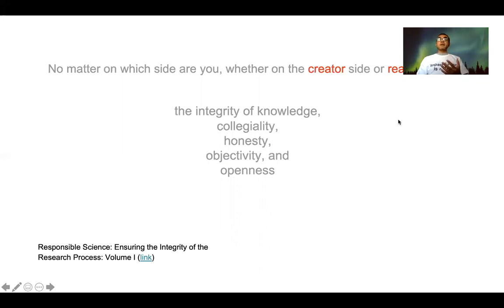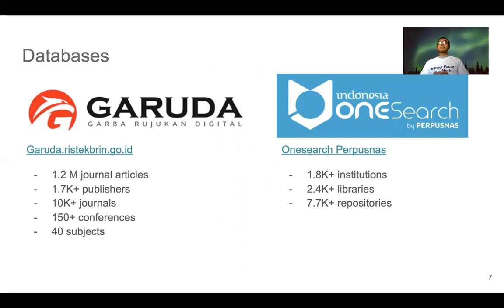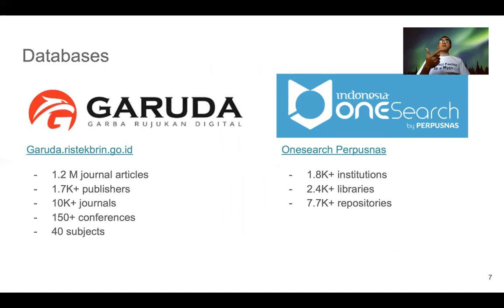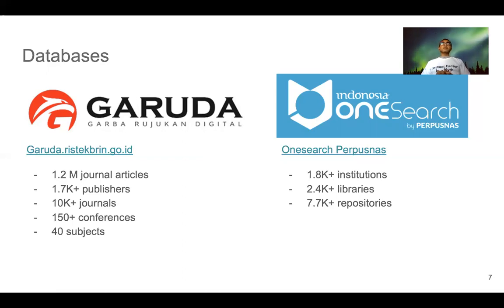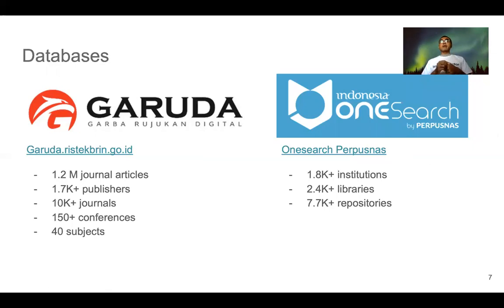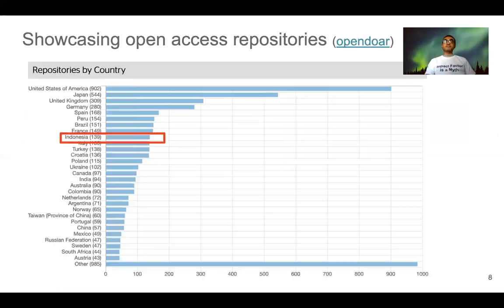For journalists wanting to tap into Indonesian scientific databases, we have two: Garuda and OneSearch. Garuda is built by the Ministry of Research and Education in Indonesia and contains 1.2 million journal articles from 1.7K publishers and 10K journals. OneSearch is built by the National Library of Indonesia, Perpusnas, and connects around 1.8K institutions with 2.4K libraries and 7.7K repositories — a huge number.